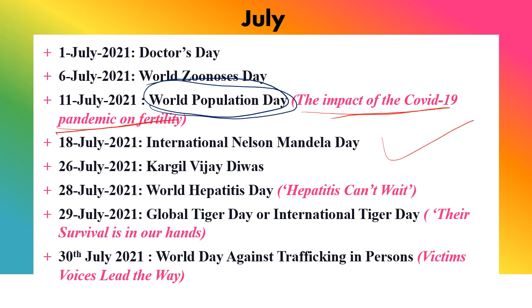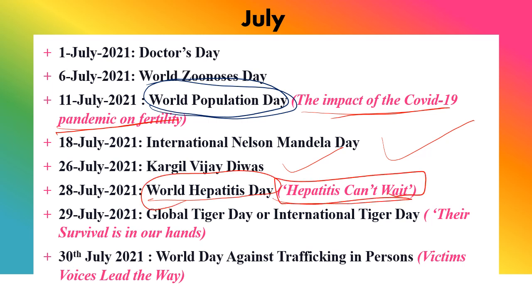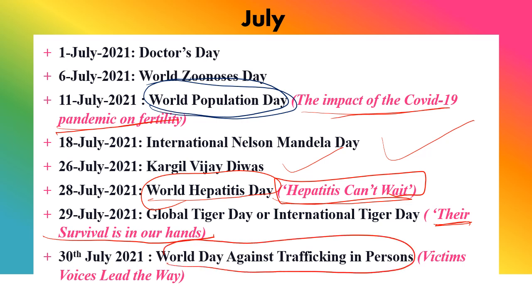18th July is International Nelson Mandela Day. 26th July is Kargil Vijay Diwas. 28th July is World Hepatitis Day, with important theme 'Hepatitis Can't Wait.' 29th July is International Tiger Day (Global Tiger Day), with theme 'Their Survival is in Our Hands.' 30th July is World Day Against Trafficking in Persons — very important — with theme 'Victims' Voices Lead the Way.'